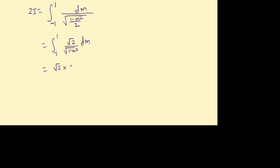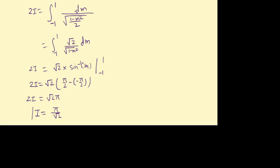The antiderivative of 1/√(1 − m²) is sin⁻¹(m). Applying the limits, we get I = π/√2. So this is our answer. If you like my video, subscribe to my channel. If you have another solution, please post in the comments. See you in the next video — bye bye!